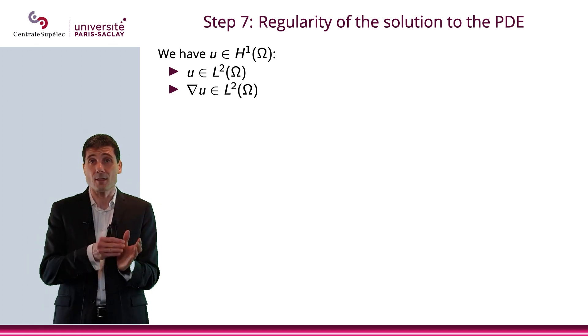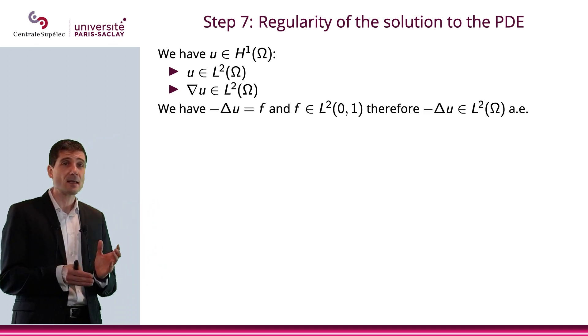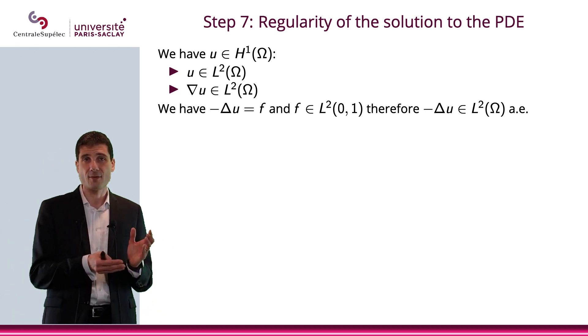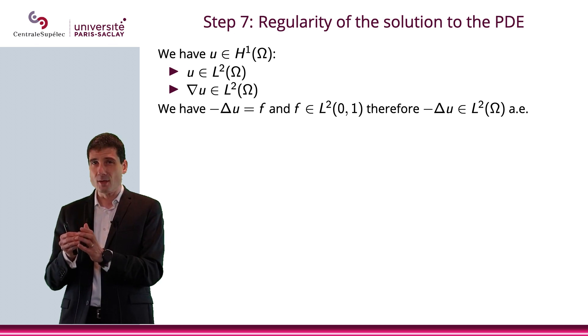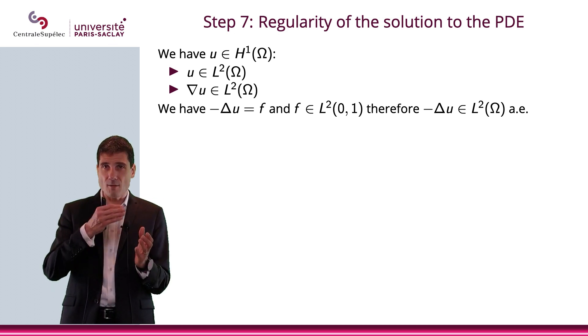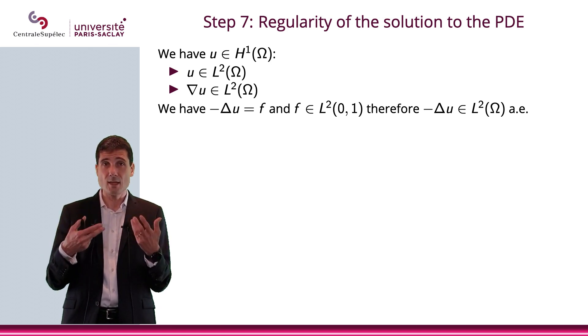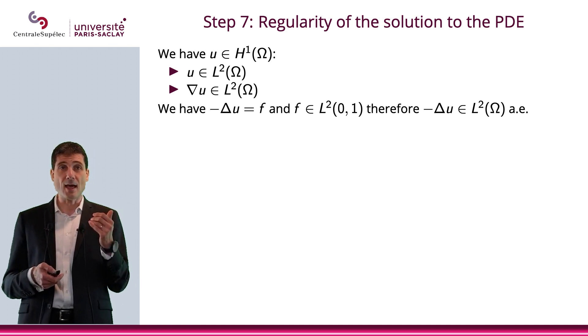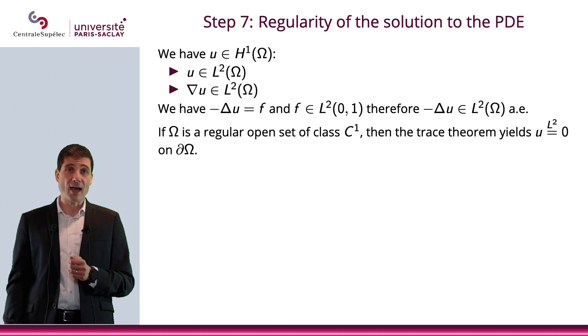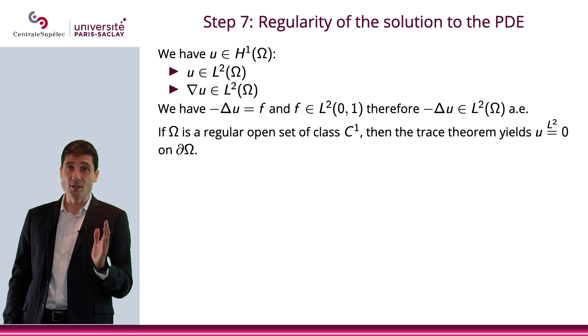Now we're going to have a little problem in step 7. We have u in H^1. In the previous video, we had u'' equals minus f, so that was in L^2. But here, I have minus Laplace u equals f, and f is in L^2. So I can say minus Laplace u is in L^2. But the Laplace operator is just the sum of the second derivatives. It doesn't mean that each second derivative is in L^2. What about the cross derivatives? We just cannot guarantee at this point that u is in H^2.